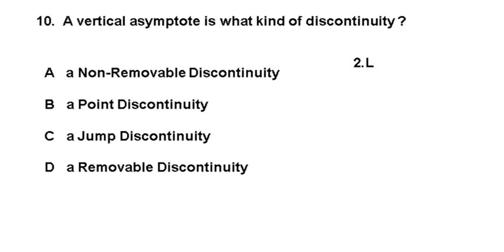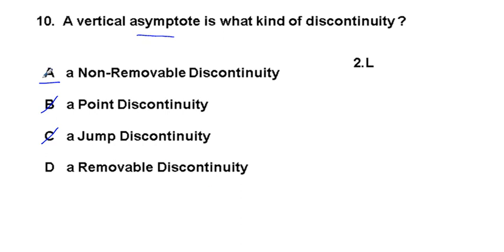Problem 10: A vertical asymptote is what kind of discontinuity? It is non-removable. It is not a point discontinuity (that was problem 2), and it is not a jump discontinuity. Logic tells us the answer is between non-removable and removable, and a vertical asymptote is a non-removable discontinuity.